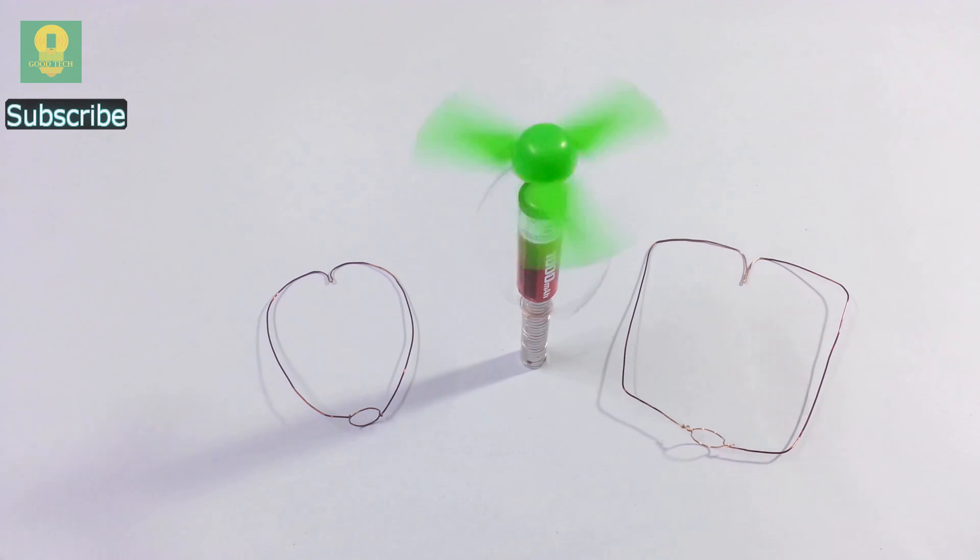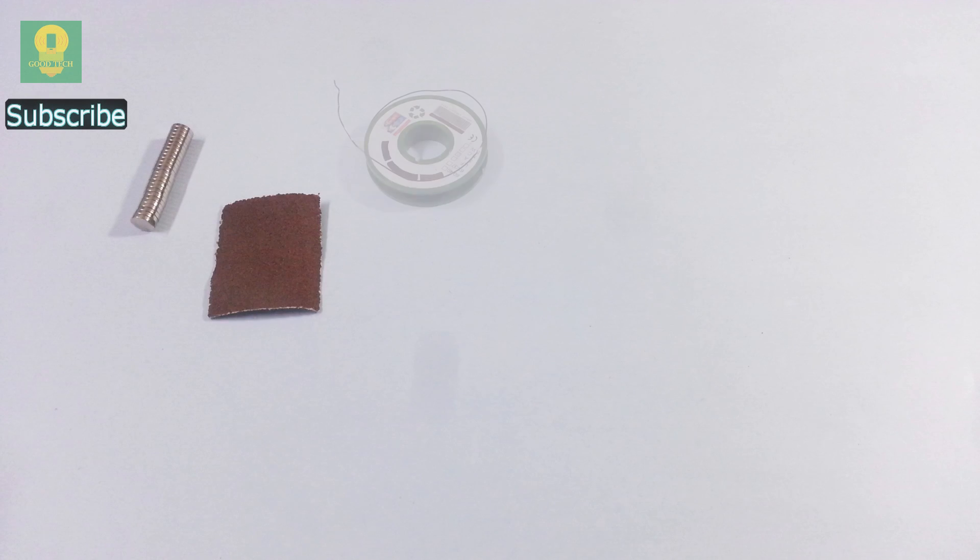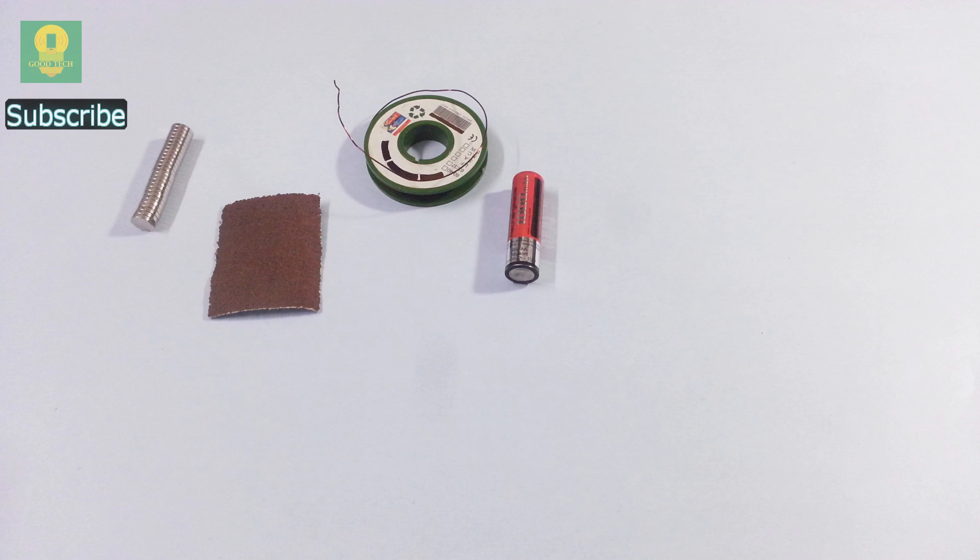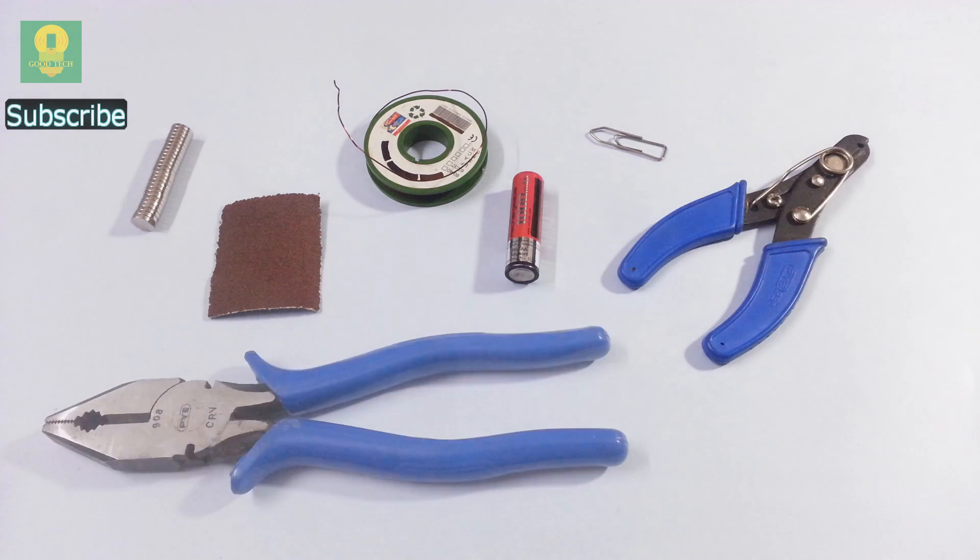The items required to perform this experiment are a few cylindrical neodymium magnets, a piece of sandpaper, any non-magnetic conducting wire, preferably copper wire, a double A or triple A cell, an office paper clip, wire cutter and pliers.